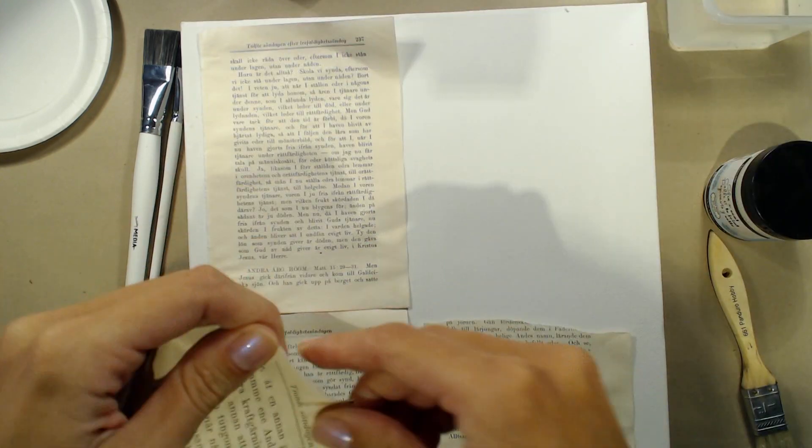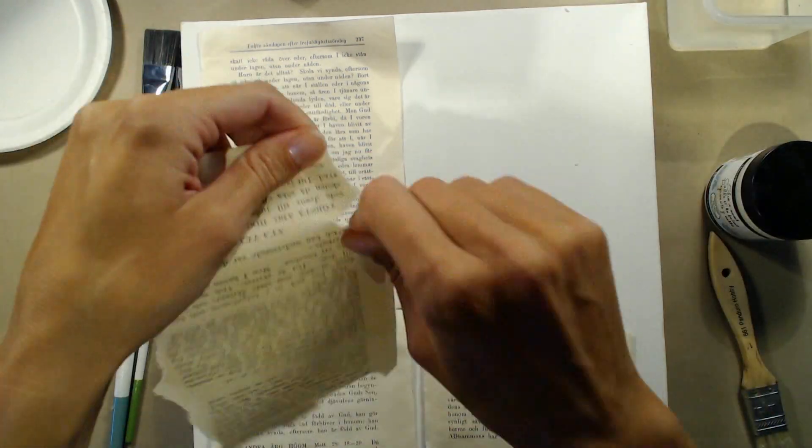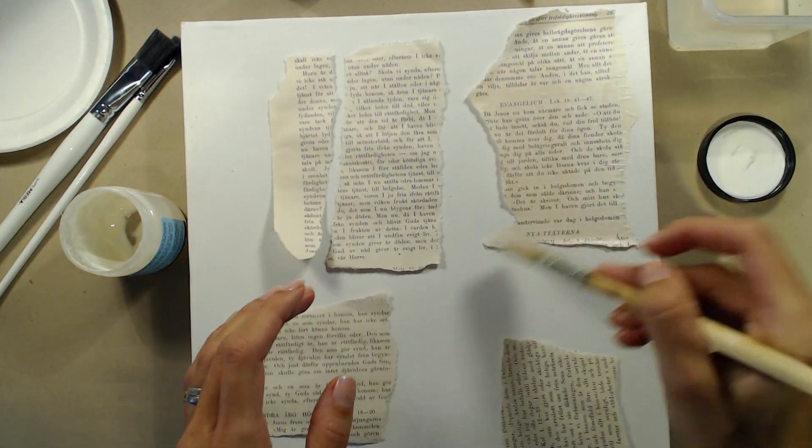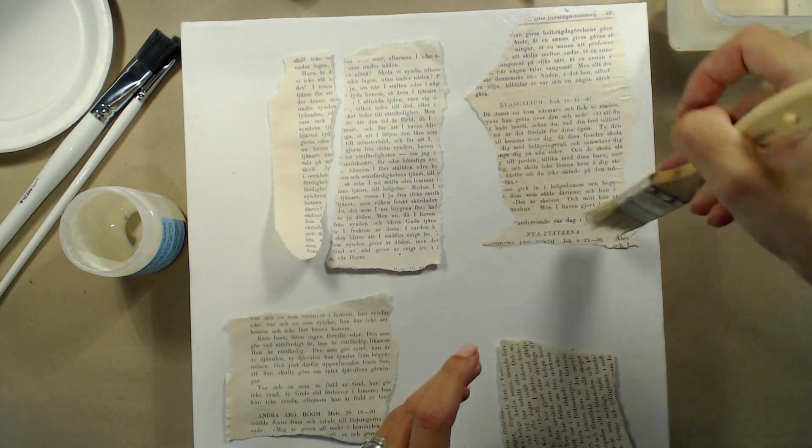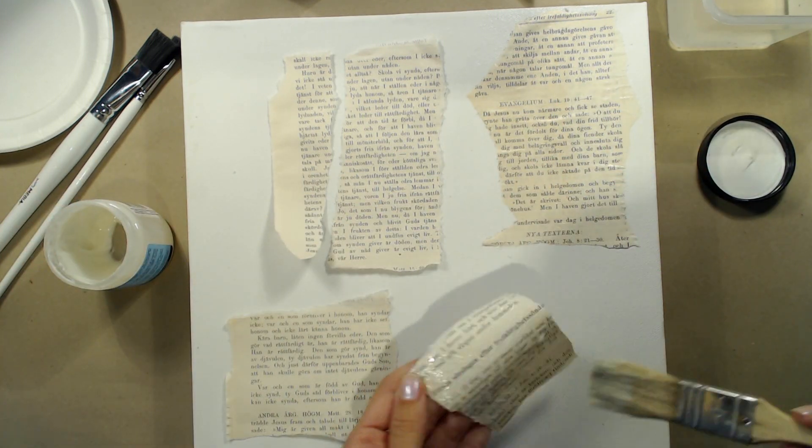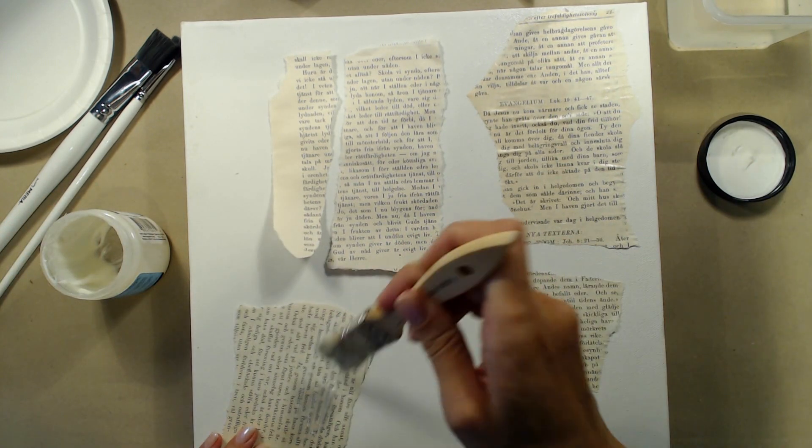The first thing I'm going to do is to add some paper from an old book. This will add a little bit of texture and hopefully some of the text will be visible in the end as well. I'm tearing the paper into different sizes and adhering it to the canvas using gel medium. I'm adhering the adhesive both on the back and the front to seal in the paper and make sure that it's really stuck down.